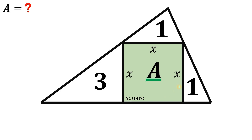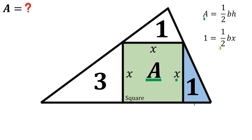Let's focus on the right triangle having an area of one square unit. We're going to rewrite the base in terms of x. We know area equals one-half times base times height. The height is x and the area is one. Solving for b in terms of x, b is equivalent to 2 over x — that is the base of this right triangle.